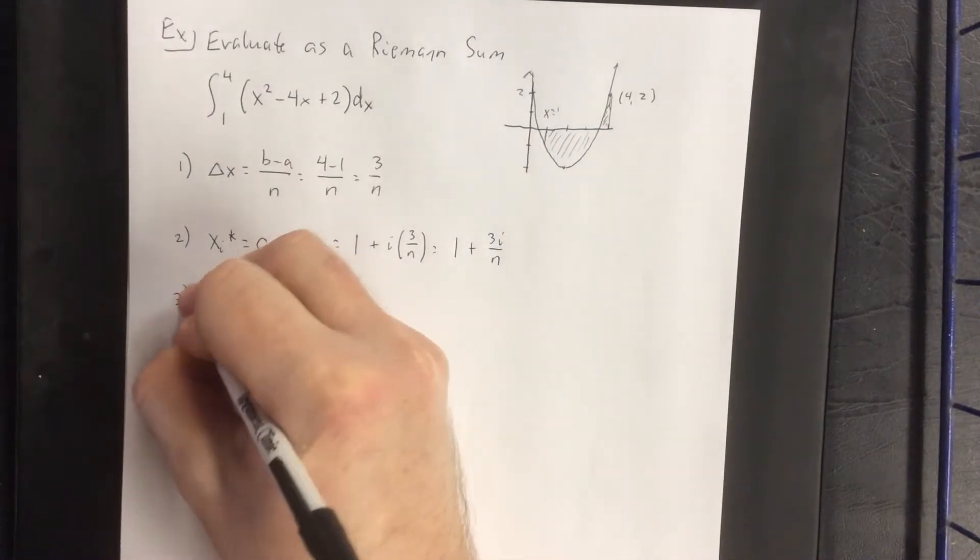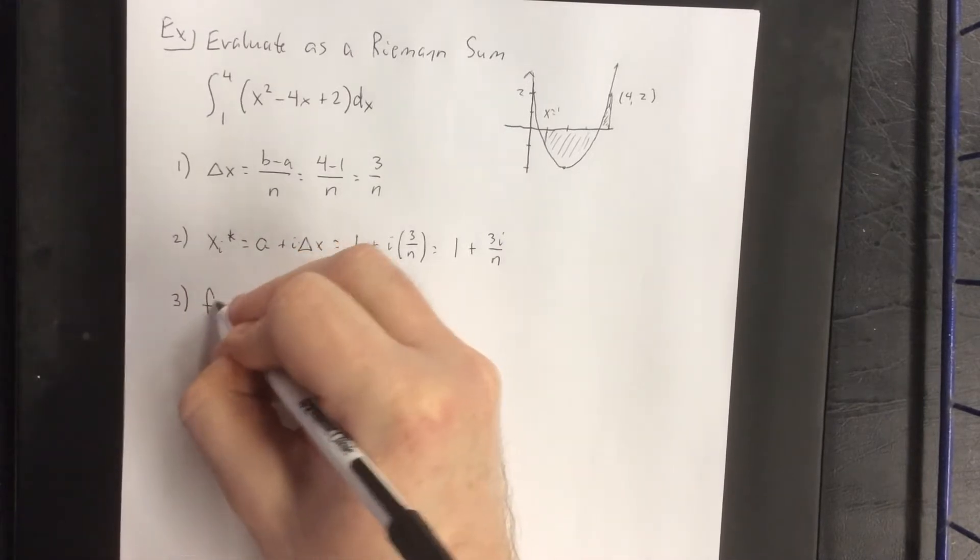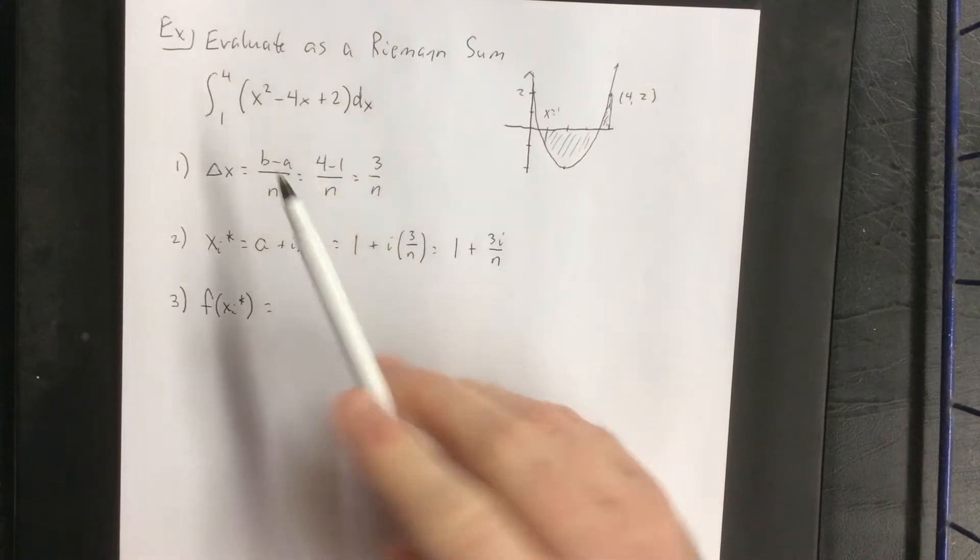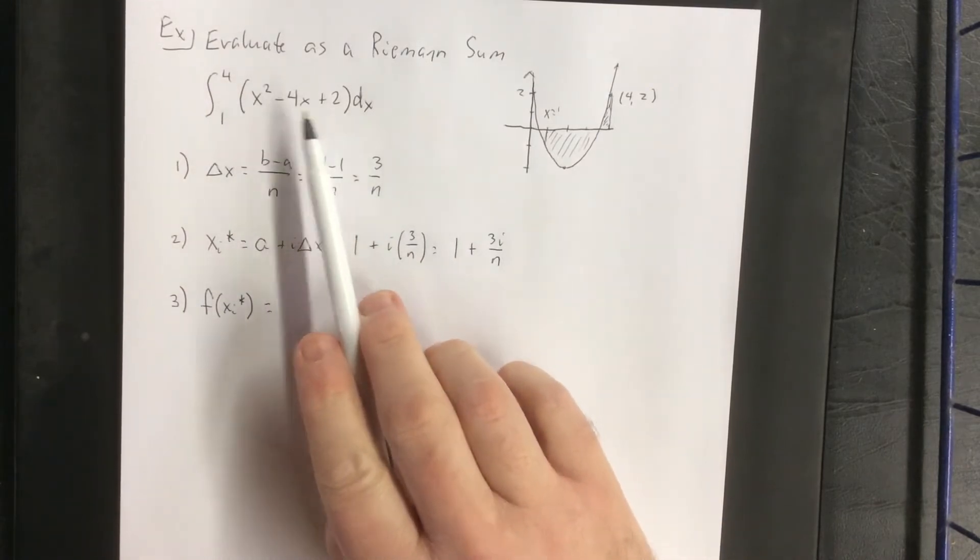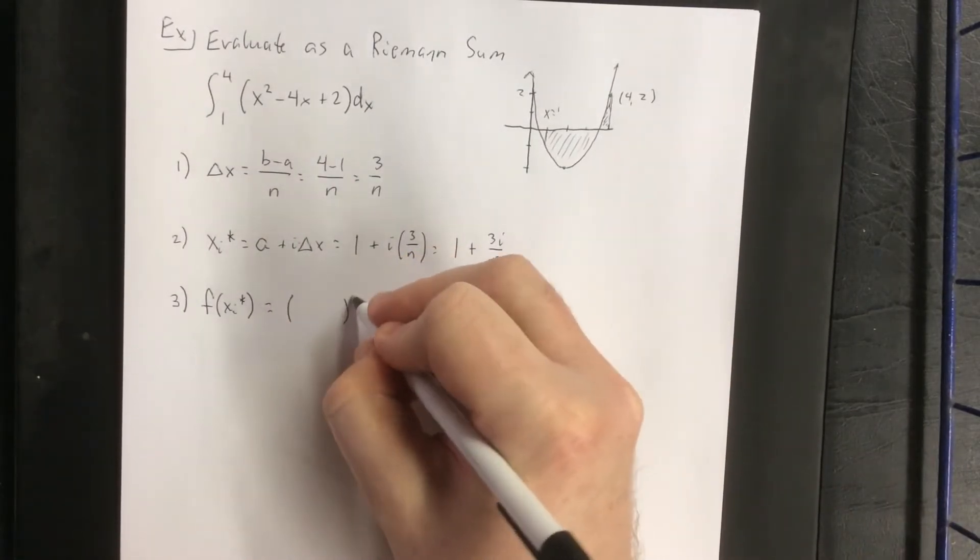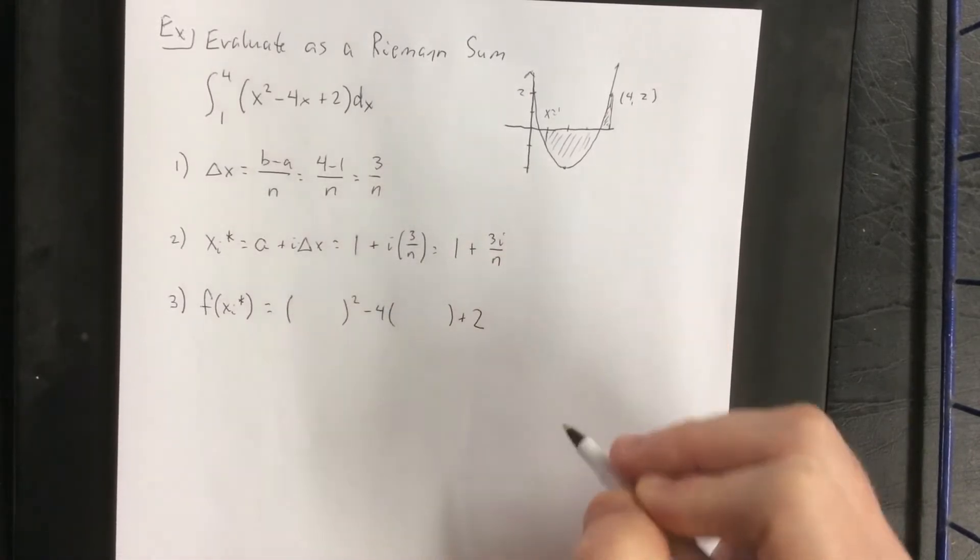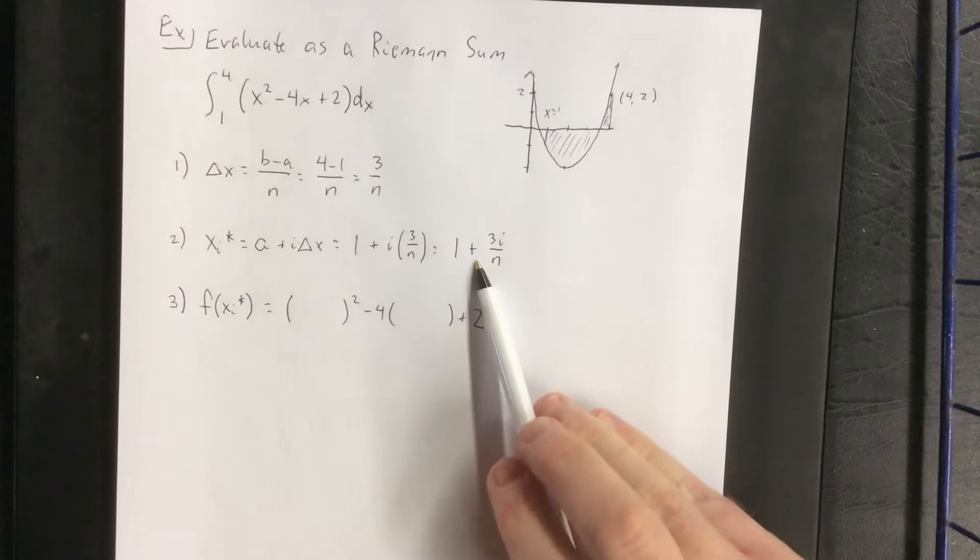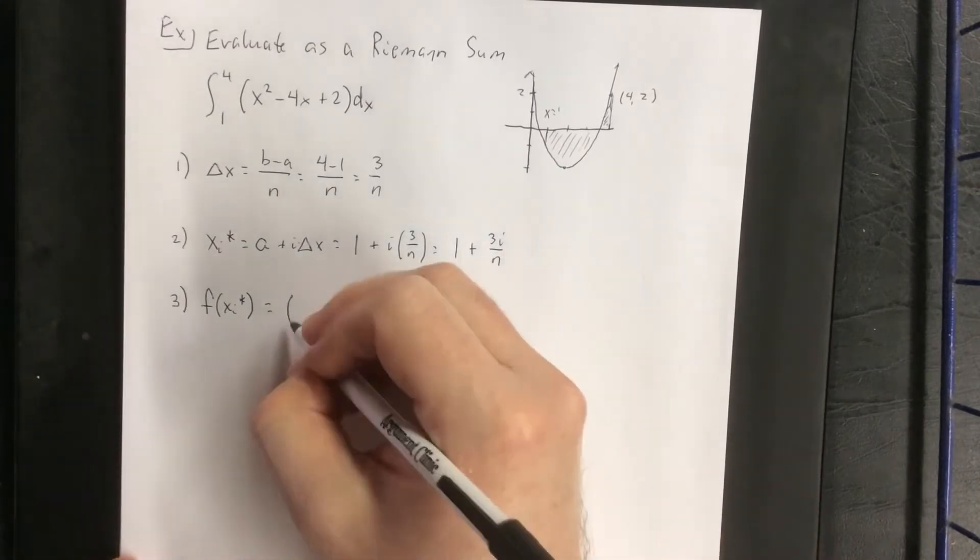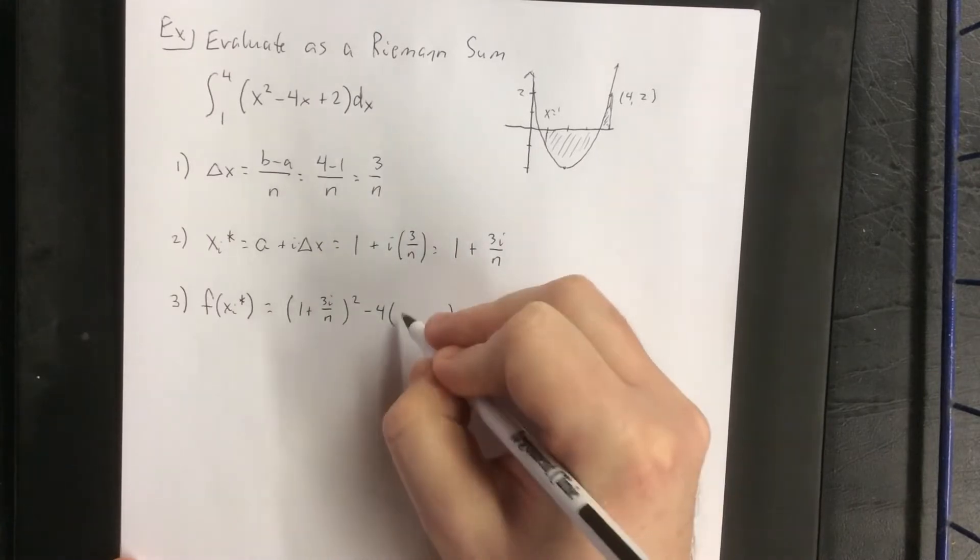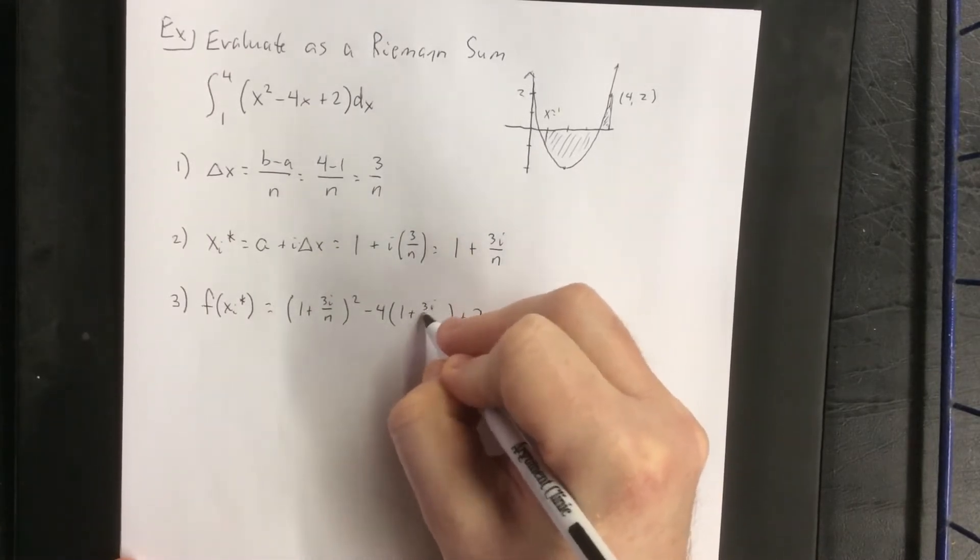We're going to plug this into the given function. The given function in this case is x squared minus 4x plus 2. But the expression that I'm plugging in is the expression that we got from our previous step, which is 1 plus 3i over n.